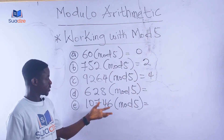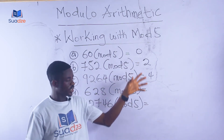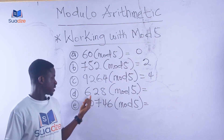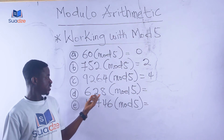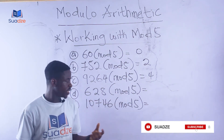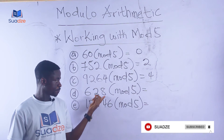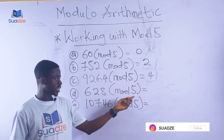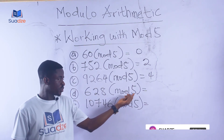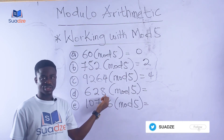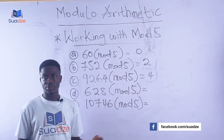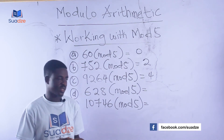Now let's look at the last two examples, which are different from the first three. We have 628 modulo 5. Here the last digit is eight, which is bigger than five, so we subtract five from the last digit: eight minus five gives us three.